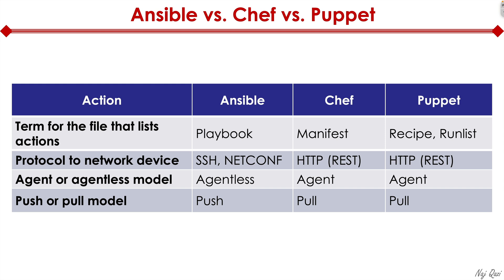Ansible is agentless — we don't need to run code on the endpoints — whereas Chef and Puppet both require an agent. That said, both Chef and Puppet do have standalone agentless solutions, but they are much more kludgy to implement and not very popular. Typically for agentless automation, Ansible is the most popular solution. Finally, Ansible uses a push model where information gets pushed from the server down to the client, whereas both Chef and Puppet use a pull model where the agent on the endpoint is responsible for pulling the config to ensure it's in compliance.